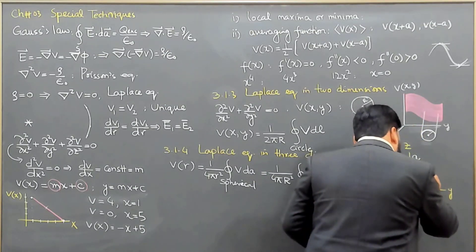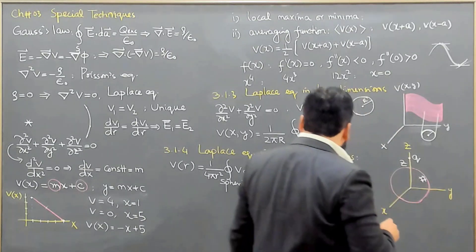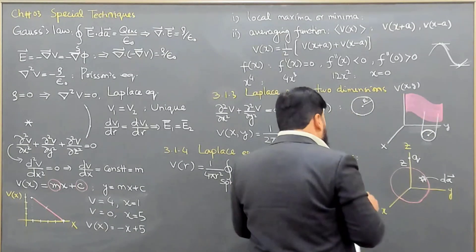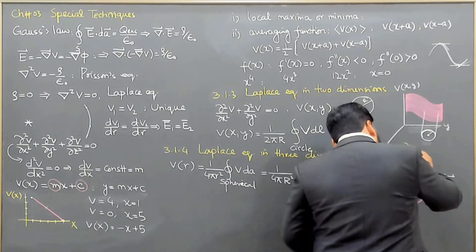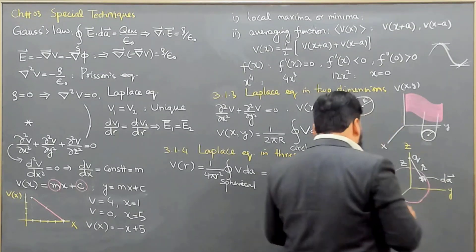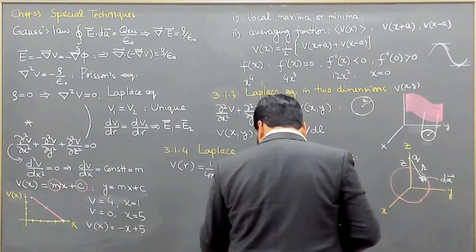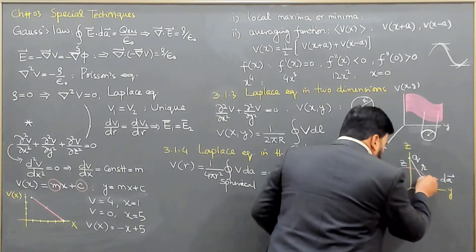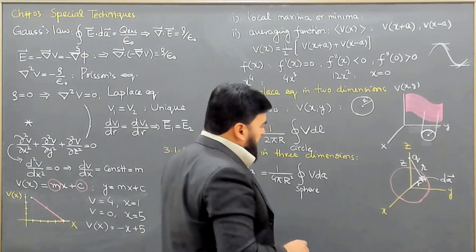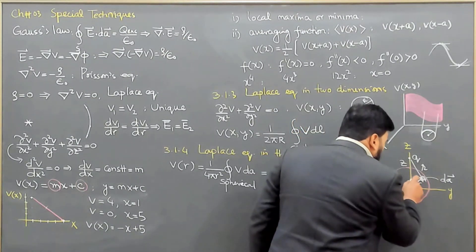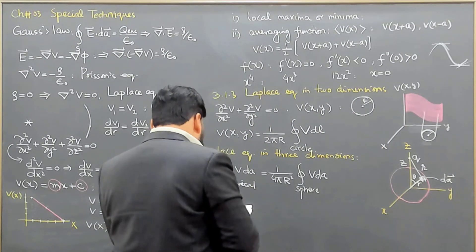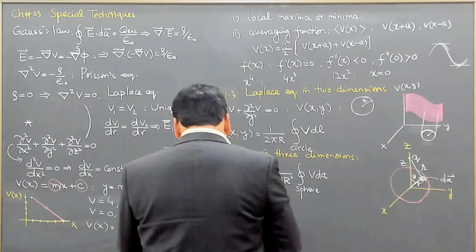I consider an area element dA for integration over the sphere. The distance from this area element to the source charge is represented by script-r (tilted r). The distance from the origin to the area element is R, and the angle between them is θ. With this geometry set up, we can proceed to the solution.